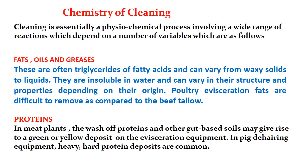Let us understand the chemistry of cleaning. Cleaning is essentially a physico-chemical process involving a wide range of reactions depending on several variables: the nature of the dirt or soil, and the detergent used for cleaning. The chemistry of the dirt and the chemistry of the detergent should match. The most common soil categories in slaughterhouses are fats and proteins. Fats, oils and greases are often triglycerides of fatty acids and can vary from waxy solids to liquids.